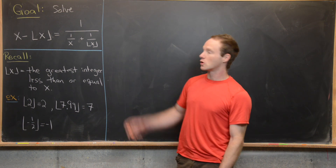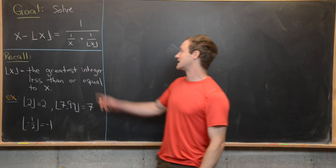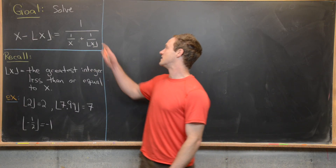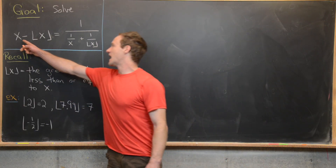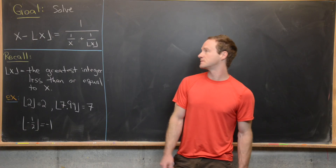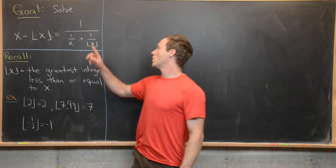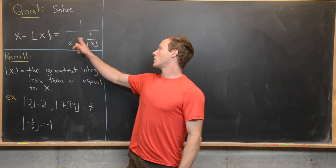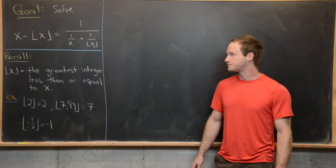Our goal is to find x that satisfies this equation: x minus the floor of x equals 1 over (1 over x plus 1 over the floor of x).